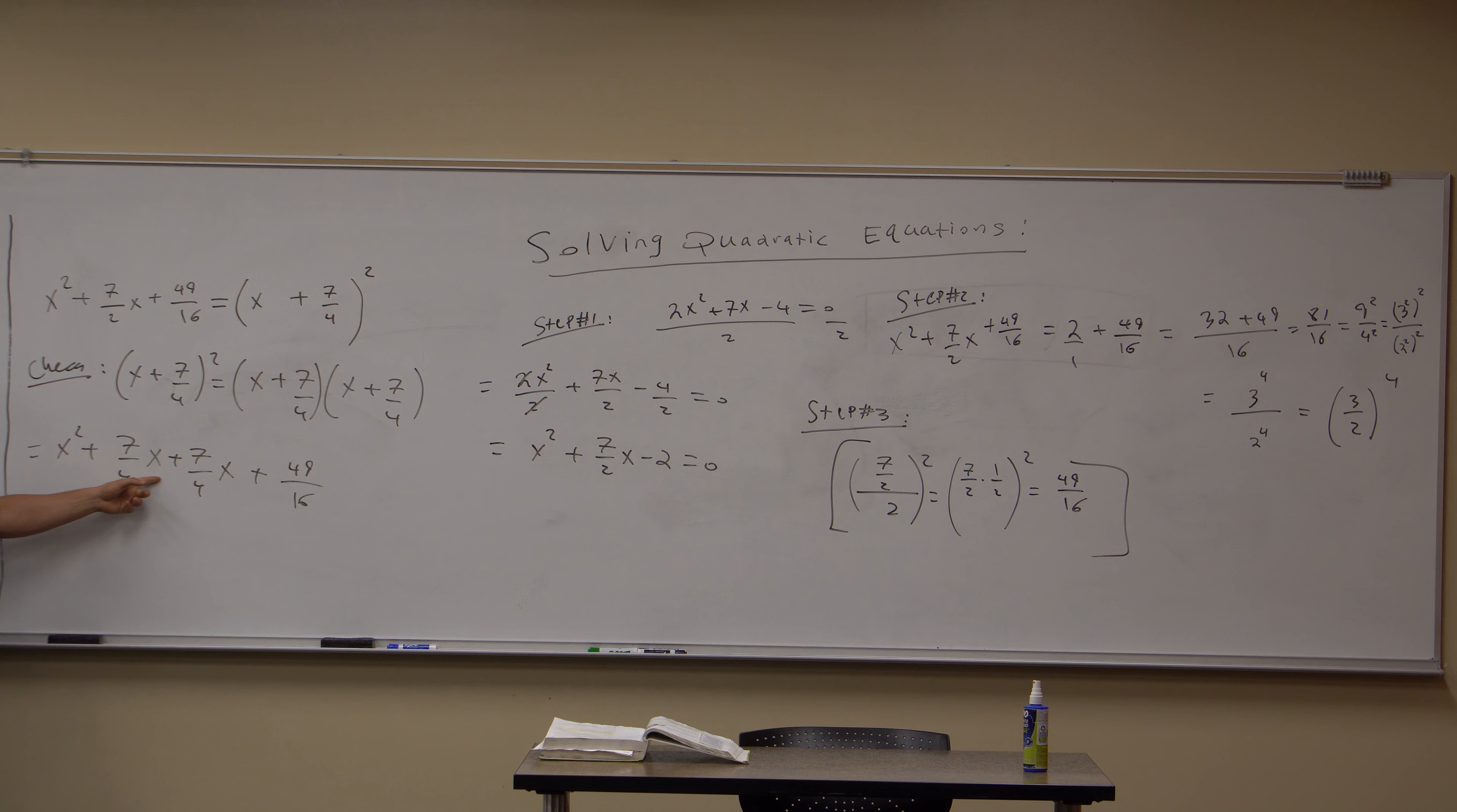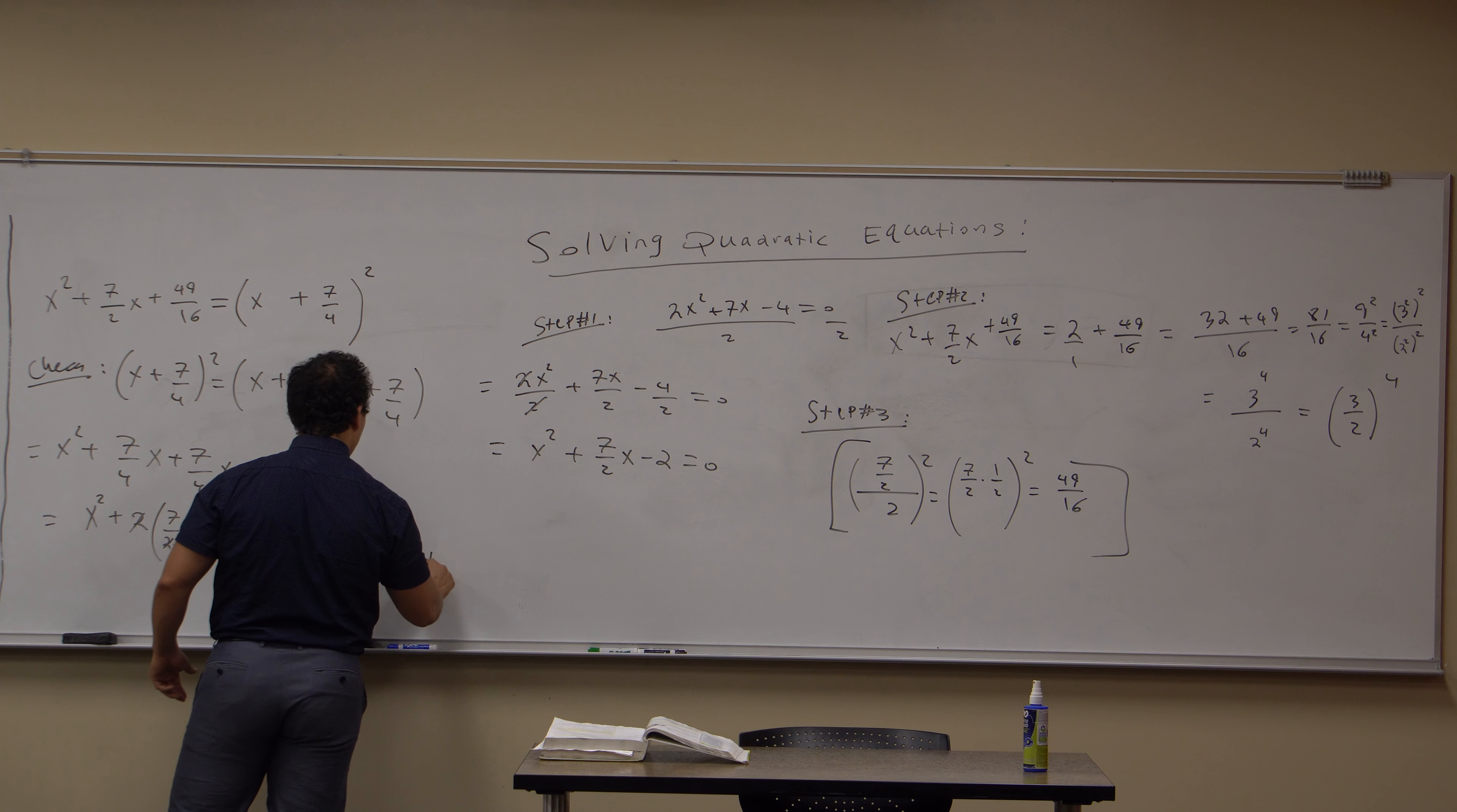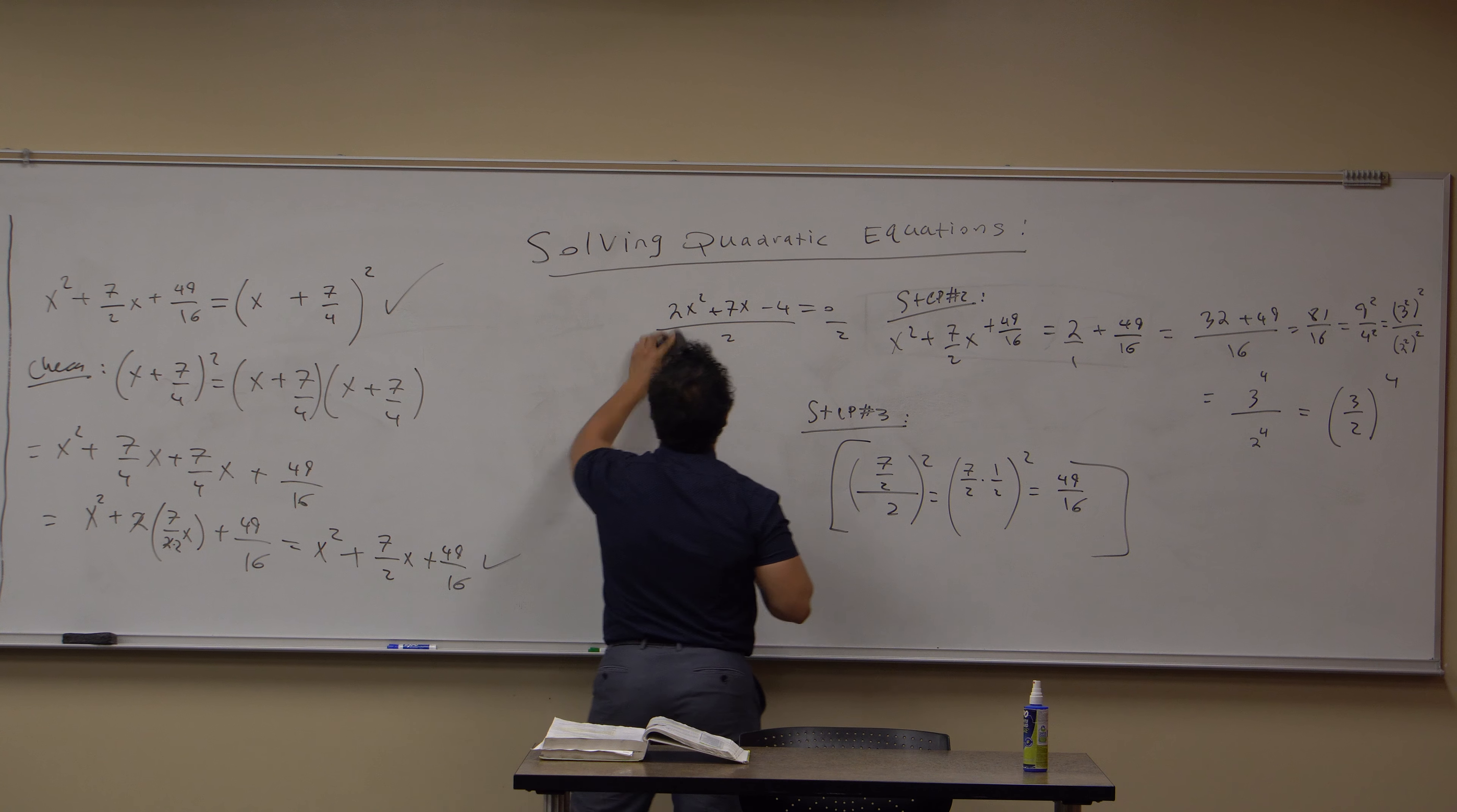Here's your check. (x + 7/4)² equals (x + 7/4)(x + 7/4). Whenever we FOIL those, I get x² + 7/4x + 7/4x + 49/16. 7/4x + 7/4x is 2·7/4x. So, this is equivalent to x² + 2·7/4x + 49/16. And that 2 and that 4 cancel because 4 is really 2·2. And so, this reduces to, you guessed it, what we have above. x² + 7/2x + 49/16. So, we did it correctly. This is, in fact, correct factorization.